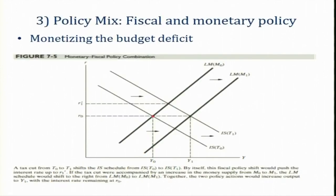The decline in output is only del-Y, which is the Y-1 to Y-naught distance. When there is an increase in government expenditure, the rate of interest increases and as a result output increases only to Y-epsilon-1. The main reason is the crowding out effect on private investment because of the increase in the rate of interest.